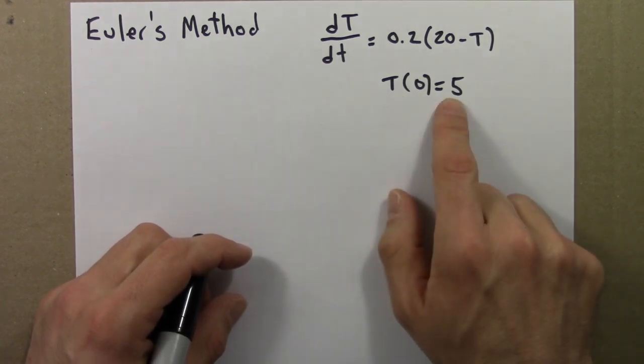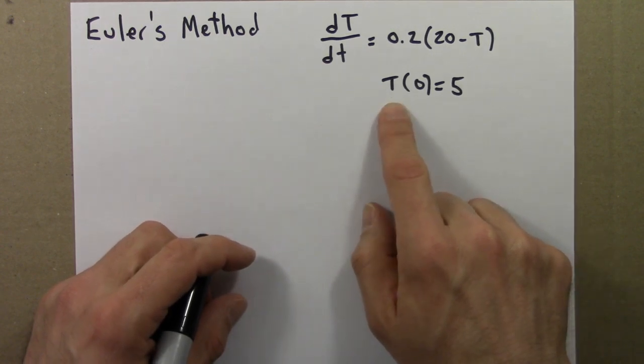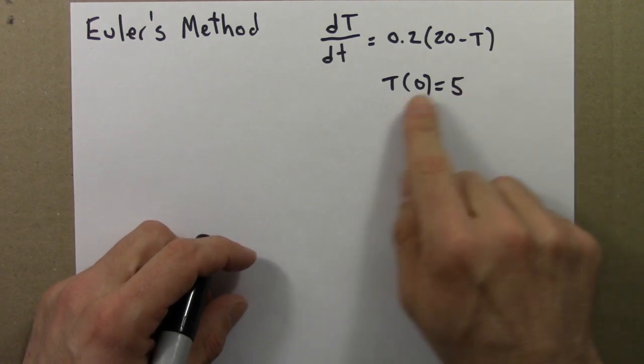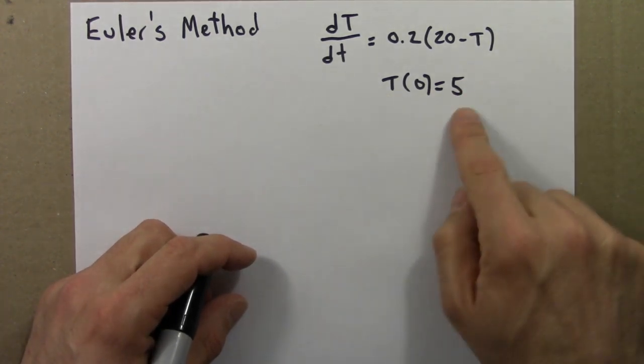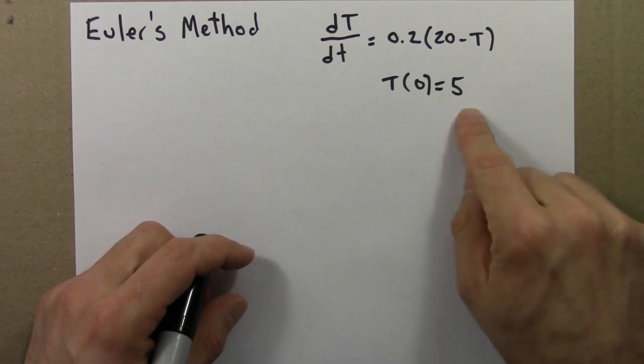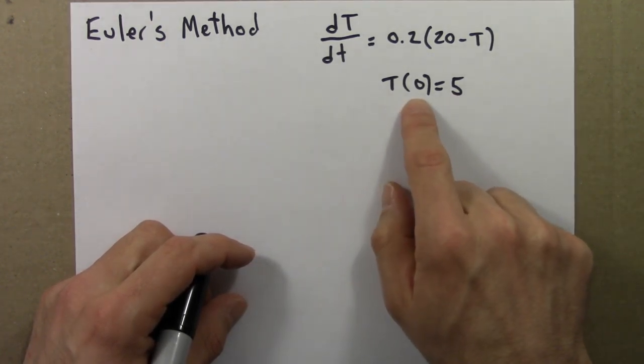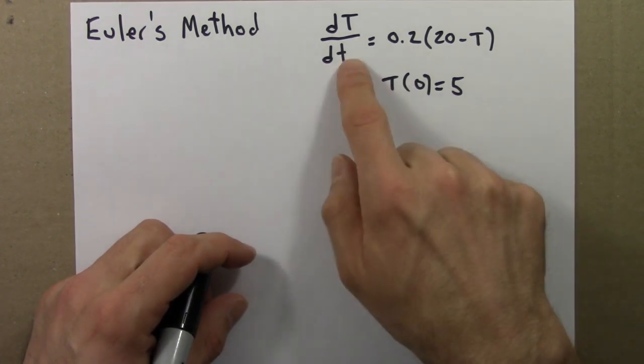So we start—where else can we start at the beginning? We know that the temperature is 5, and we have this differential equation, this rule. So I can use these two facts to figure out how fast the temperature is changing at the initial time when T equals 5. That's what this differential equation does.